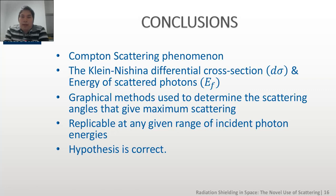As conclusion, we mentioned that Compton scattering phenomena is a chosen phenomenon to validate our proposal. The two key parameters in this research was the Klein-Nishina differential cross-section d-sigma and the energy of the scattered photons EF. And we found that a graphical method could be used to determine the scattering angles that gives maximum scattering. And this could also be repeated for any given incident photon energy. Hence, the hypothesis of placing a target object between a star and the spacecraft in order to block most of the incoming photons is therefore validated.